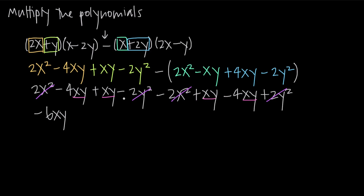All four terms are like terms — they all have xy — and the only difference is their coefficients: negative 4, positive 1, positive 1, and negative 4. Adding those coefficients together: negative 4 plus 1 plus 1 minus 4 equals negative 6. Keeping the xy, our final answer is negative 6xy.